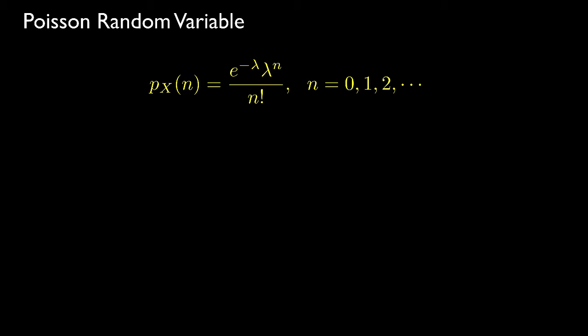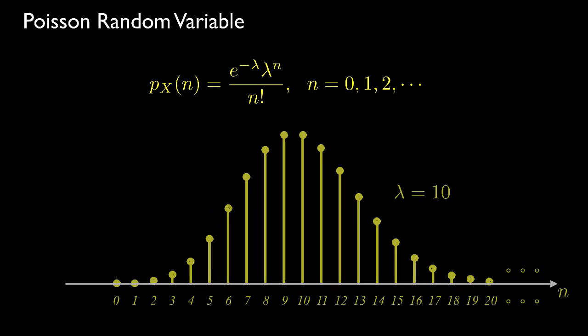The Poisson random variable is an important example that arises in many engineering and science applications. Its probability mass function is usually specified with a parameter called lambda that determines the shape of the distribution. For lambda equal to 10, the mass function is zero for negative integers but has a non-zero value for all positive integers. One common use for a probability mass function is to determine the probability that a discrete random variable takes its value in some interval.